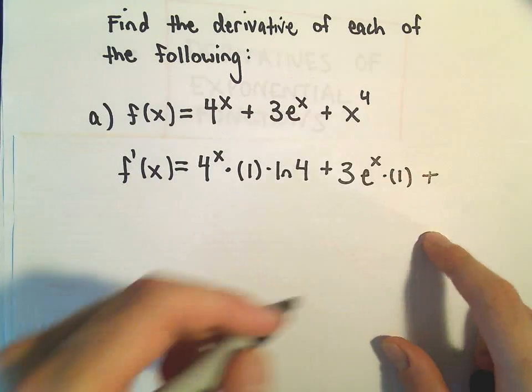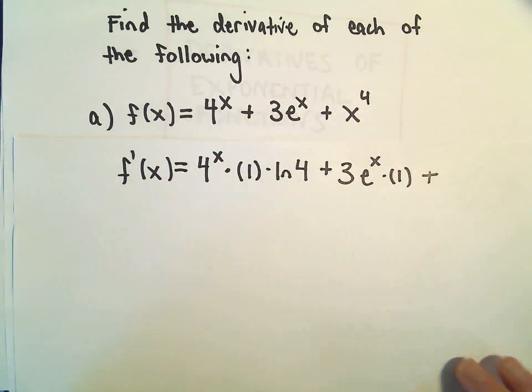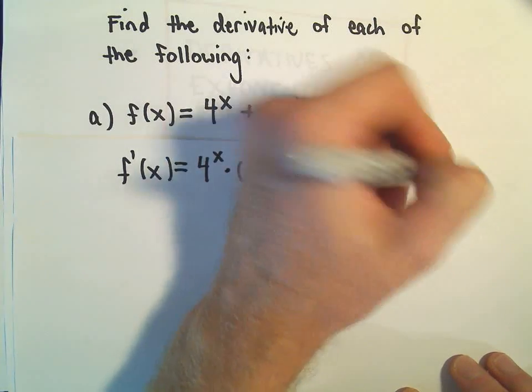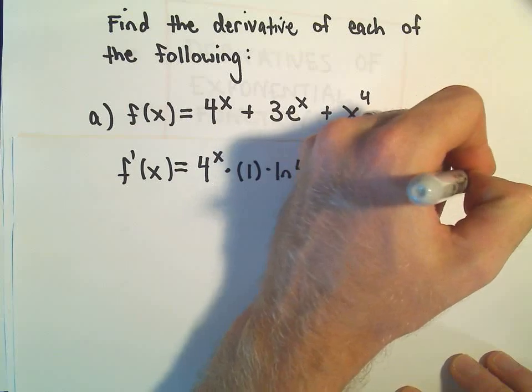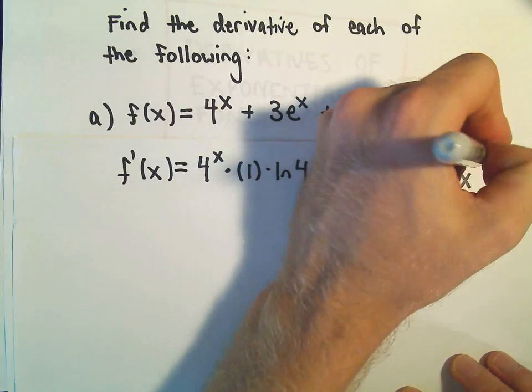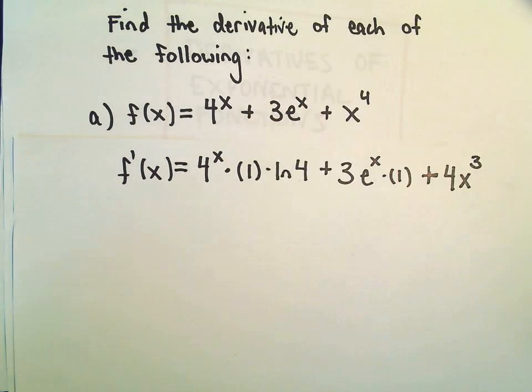And then last but not least, we have x to the 4th. And that's just going to use the power rule that we've been using a lot previously. So the 4 comes out front, we leave the x alone, and then we just take 1 away from the exponent.